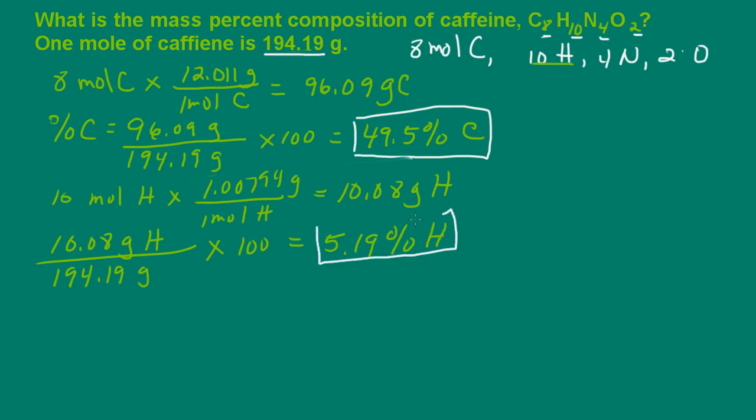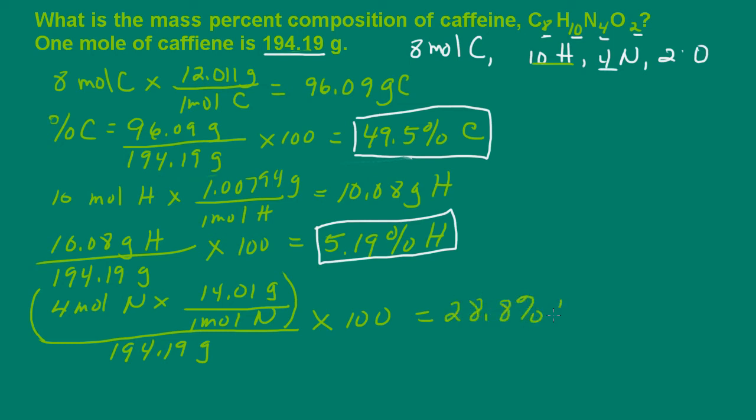Now we still have to do the same for both nitrogen and oxygen. So we have 4 moles of nitrogen. So 4 moles of nitrogen. And 1 mole of nitrogen is 14.01 grams. And then I'm just going to go ahead and divide this whole quantity here by the mass of the caffeine. And multiply it by 100. And I get 28.8 percent nitrogen.